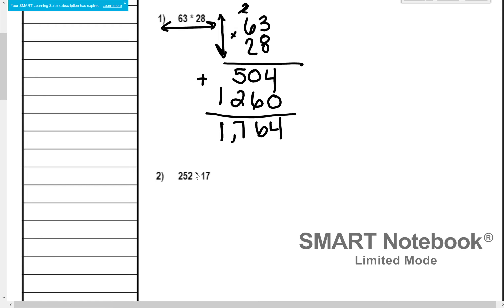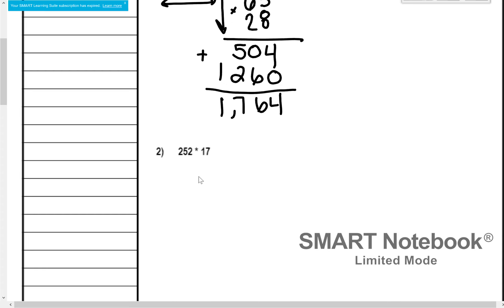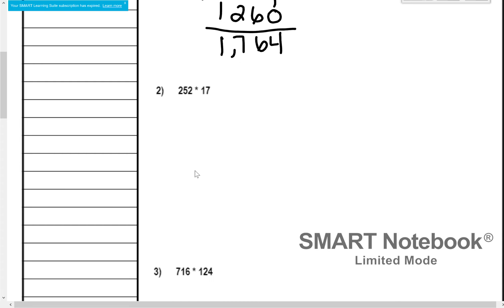All right, now we're going to do a little bit different type of example, where we have a 3-digit number times a 2-digit number. All right, so we have 252. First step is to write it vertically up and down. And I'm going to line up that 17 towards, so my 1 space is with my 1 space, my 10 space is with my 10 space. And I don't have anything for my 100 space, so I just leave it.